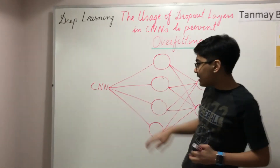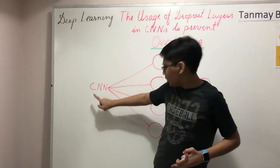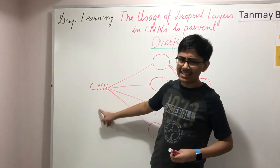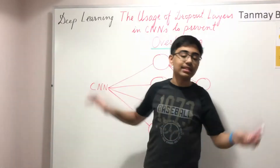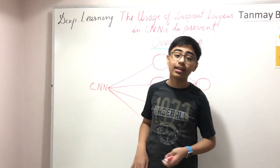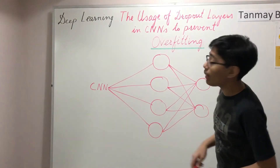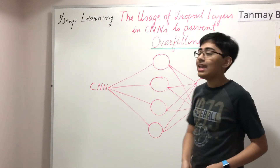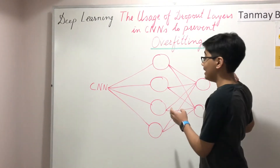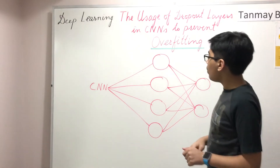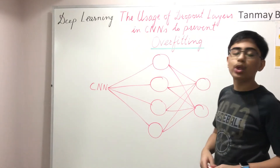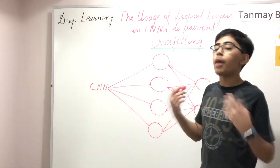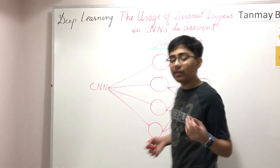What we're trying to do is reduce overfitting in this section of the convolutional neural network. We can also incorporate dropout layers in the CNN itself, but that's a separate video topic. Today we're talking about dropout layers inside the dense layers.